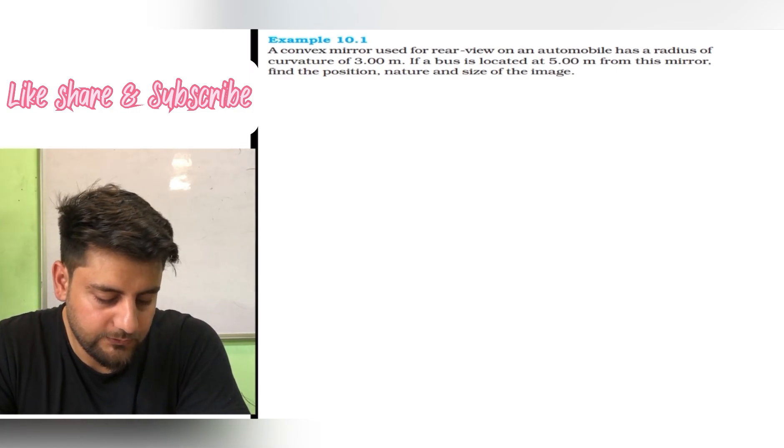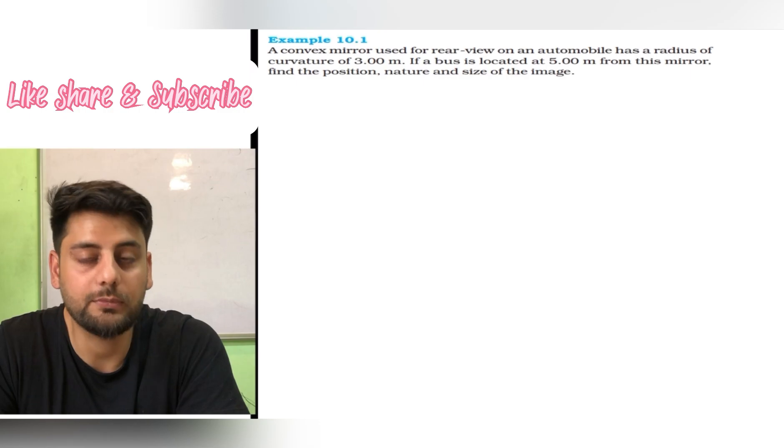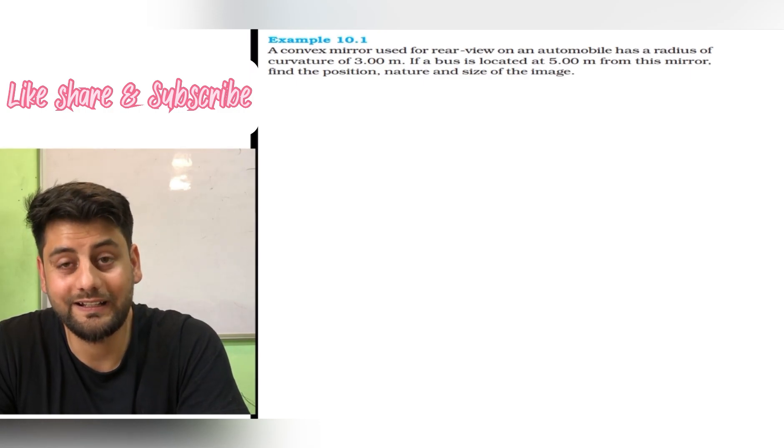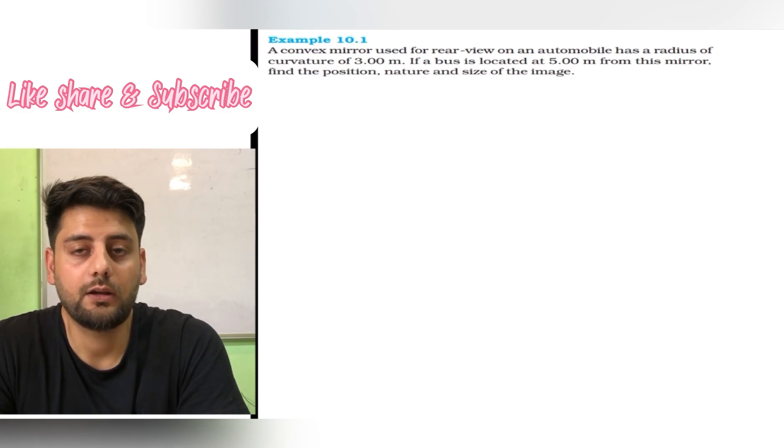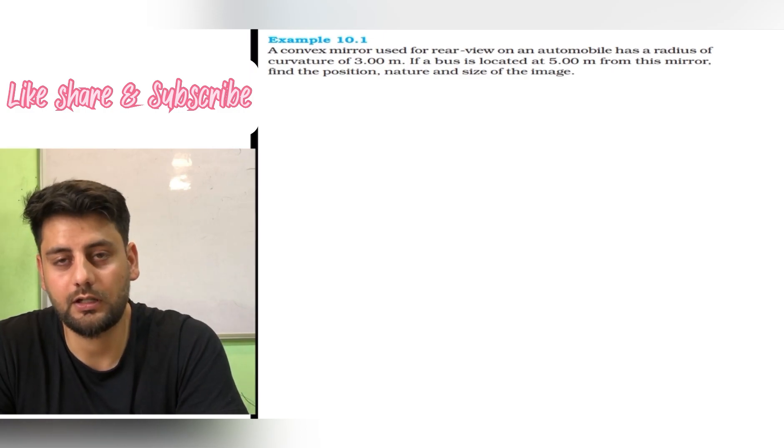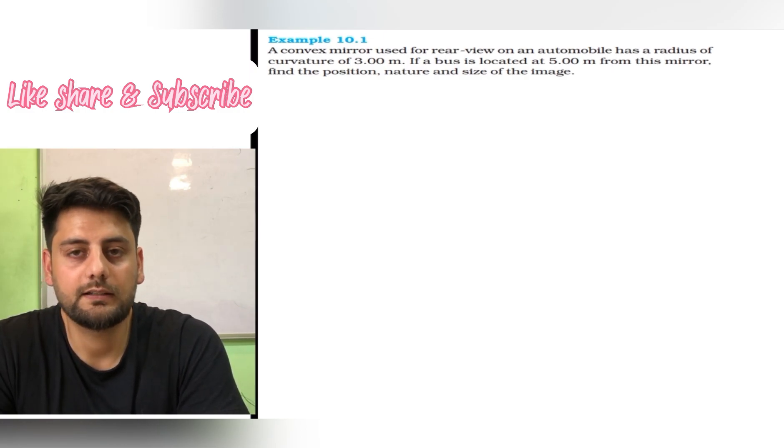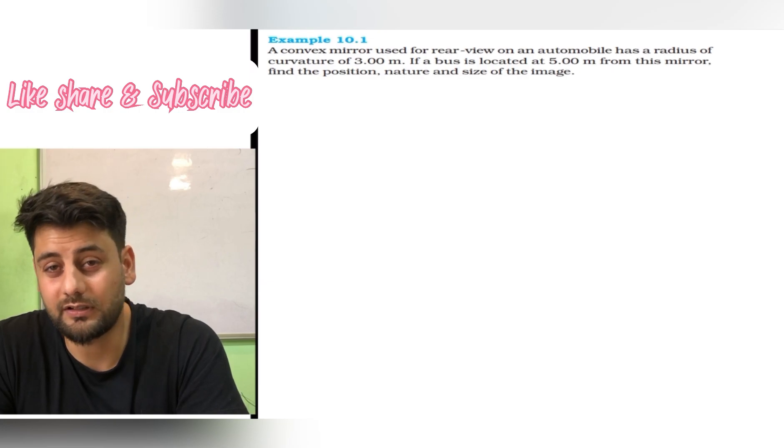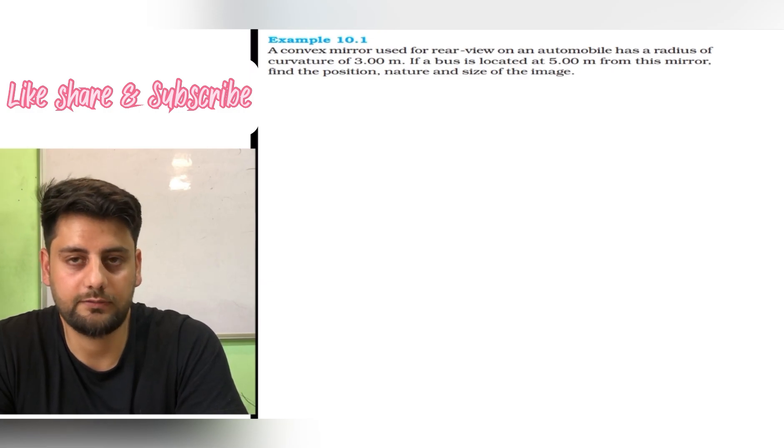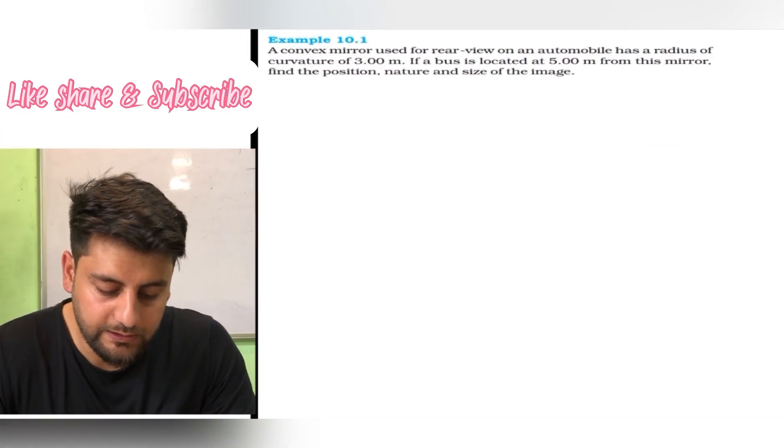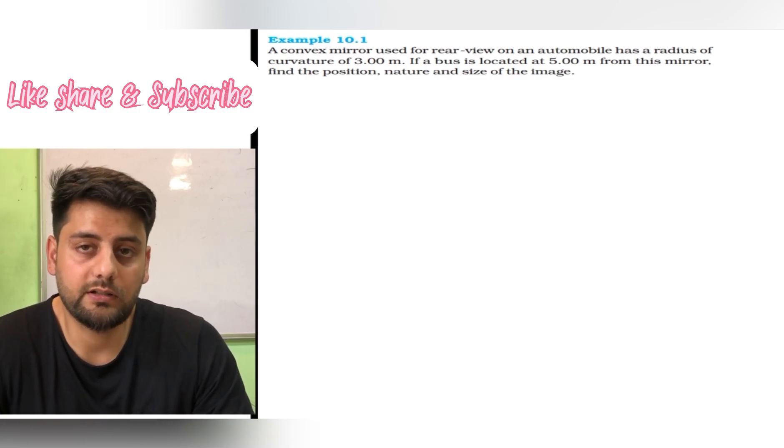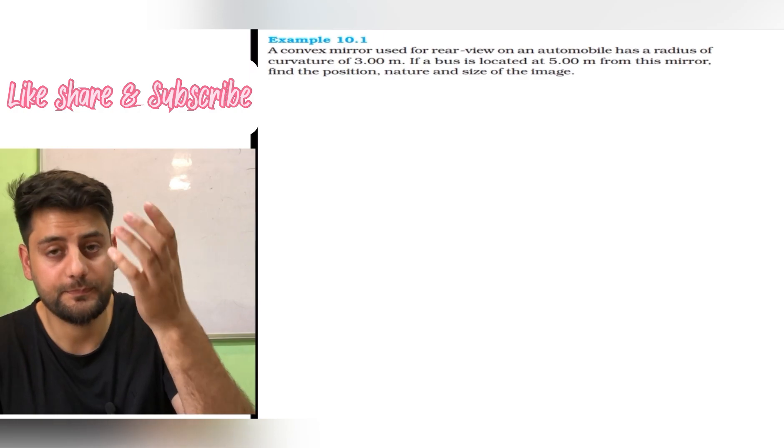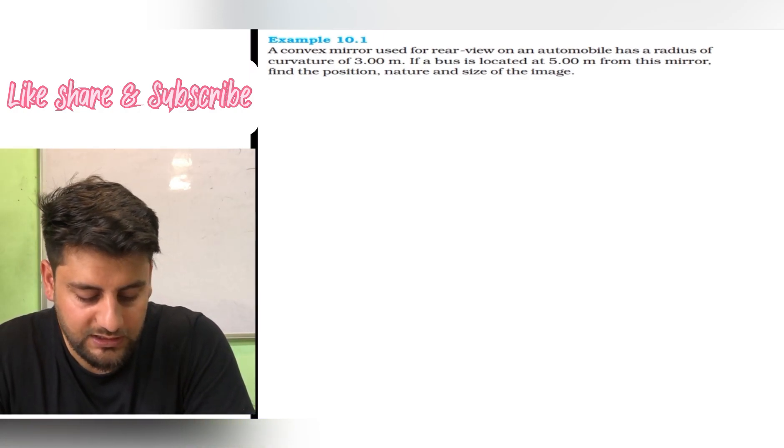It is saying that a convex mirror used for rear view on an automobile has a radius of curvature of 3 meter. If a bus is located at 5 meter from the mirror, find the position, nature and size of image. So let us write all these things and then continue.